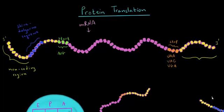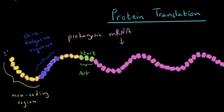Let's take a piece of mRNA that we're going to translate. I want to make it very clear that we're dealing with prokaryotic mRNA, because eukaryotic mRNA is actually going to be a little bit different, and we'll see later in what ways. Starting at our 5' end, we have this non-coding region in yellow, which is a part of the mRNA that the ribosome is not going to translate. So whatever's written there is not going to end up in our polypeptide chain. The non-coding regions do have certain functions; we're just not going to get into that right now.